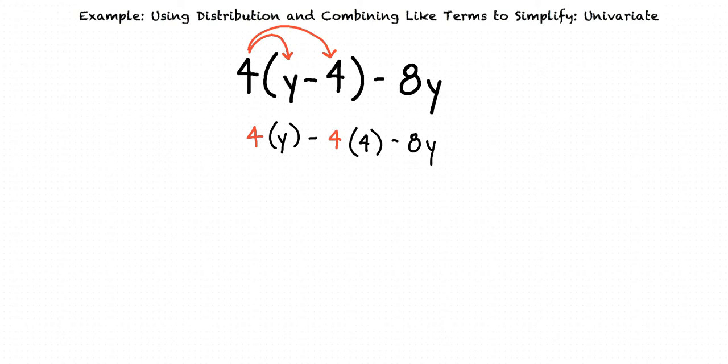4 multiplied by y results in 4y, and 4 multiplied by 4 results in 16. So our expression now looks like this: 4y minus 16 minus 8y.